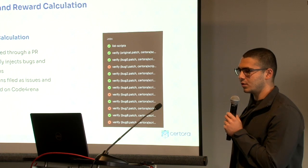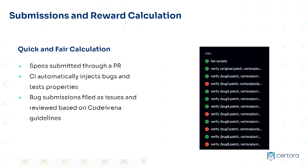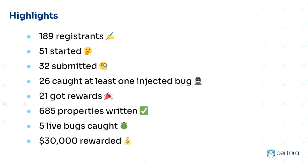Once everything is submitted — everyone has a private fork and creates a pull request — we have CI running that injects all the bugs and runs all the specs against all the bugs, so right away you can know how well you did. The first patch is verify_original, with no changes to the code, so you want your properties passing on the original and failing with a bug injection. In this example, a person caught four of the ten injected bugs. There were over 180 registrants. Twenty-six caught at least one injected bug, twenty-one got rewarded, and over 600 properties were written.